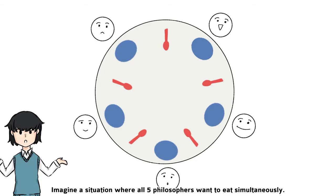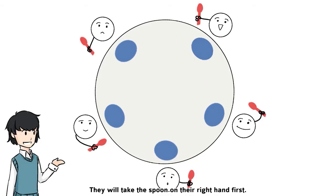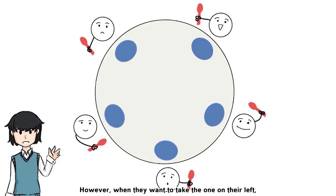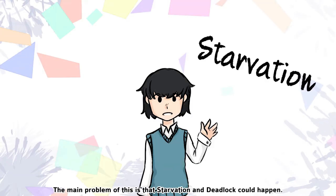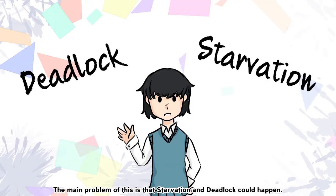Imagine a situation where all five philosophers want to eat simultaneously. They will take the spoon on their right hand first. However, when they want to take the one on their left, they can't, since the philosopher on that side have already taken it. The main problem of this is that starvation and deadlock could happen.